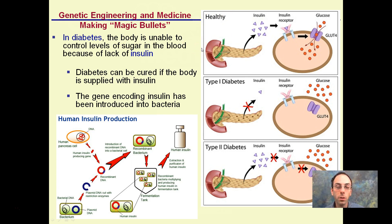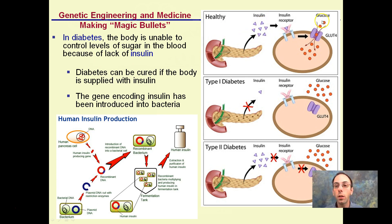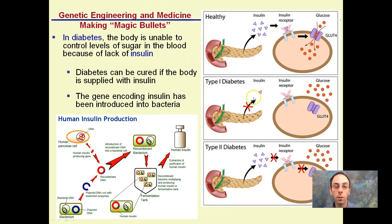One example pertaining to this is diabetes, where the body is unable to control levels of sugar because of a lack of insulin. In a healthy individual, the pancreas produces insulin when sugar is present, allowing sugar to get into cells and regulating blood glucose levels.